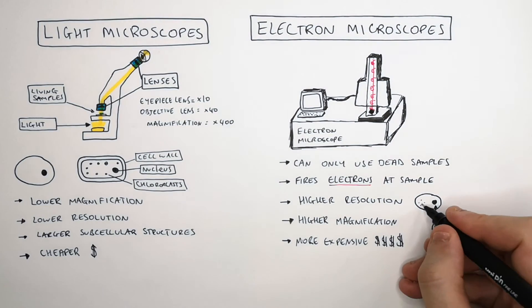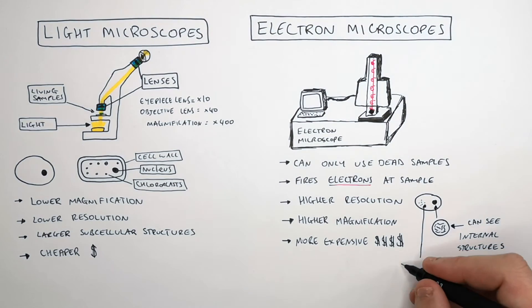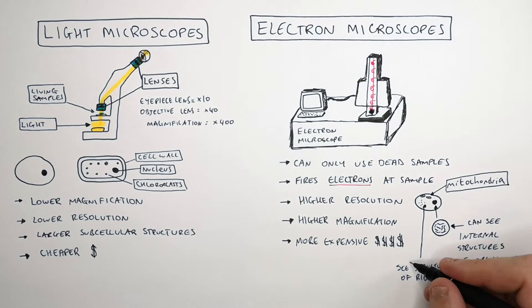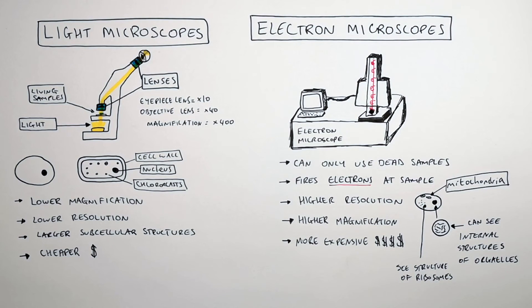You can use electron microscopes to see the structures of ribosomes and mitochondria — you cannot do that using the light microscopes you have in school.